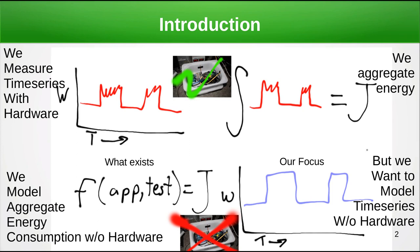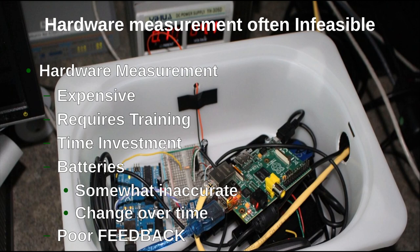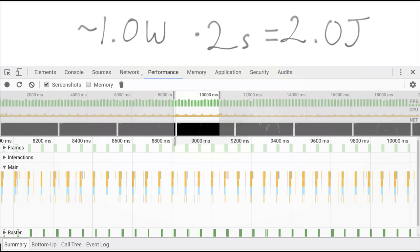What we want to do in this paper is slightly different. We want to not only model aggregate energy consumption, but we want to recover the time series without hardware — to model that time series over time such that we can correlate traces and see when power use is high or low. We want to do it without hardware because it's generally inaccessible to developers: it's expensive, requires training, and requires a time investment. Even battery measurement is somewhat limited, and battery qualities change over time.